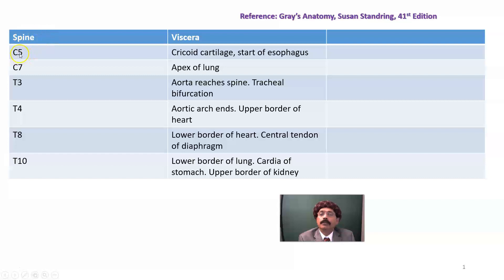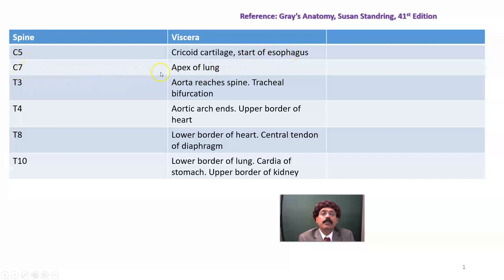First of all, we'll go to the cervical vertebra C5. At this level, we have the cricoid cartilage, which is located below the thyroid cartilage. Below the cricoid cartilage, there will be the beginning of the trachea, and at the same level, we also have the start of the esophagus. At vertebral spine C7, we will have the apex of the lung.